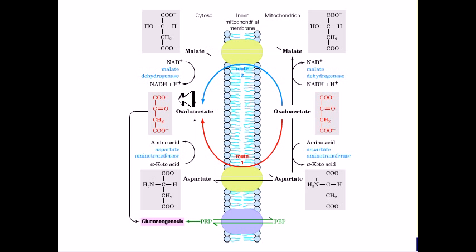In the cytosol, malate is reconverted to oxaloacetate to complete the rest of the reactions. Then finally it will again be converted into something else for taking it back inside the mitochondria.